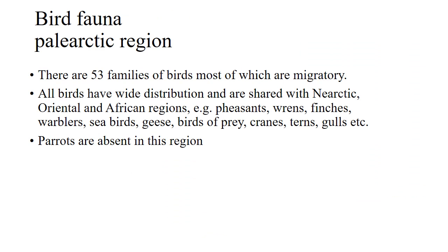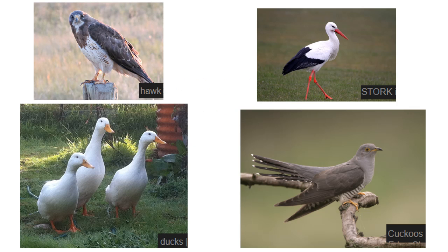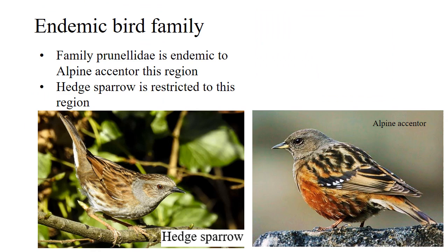All birds have wide distribution and are shared with the Nearctic, Oriental, and African regions. Birds in this region include pheasants and thrushes, finches, warblers, seabirds, geese, birds of prey, cranes, terns, and gulls. However, parrots are absent from this region. Other birds present include storks, ducks, and cuckoos. Only one family endemic to this region is the Prunellidae, represented by the sparrow and Alpine Accentor.